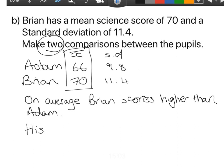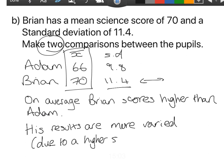His results - the second sentence is now going to talk about the standard deviation. His standard deviation is higher. The higher the number, the more spread out they are. So his results are more varied. And you don't need to say why, but for the sake of your notes, this is due to a higher standard deviation. Now we could have spun this question a completely different way. We could have talked about Adam and said on average Adam scores lower than Brian. His results are less varied because Adam's numbers are closer together.